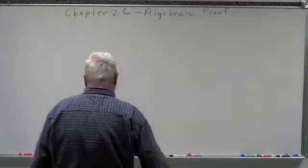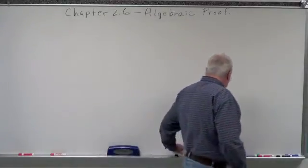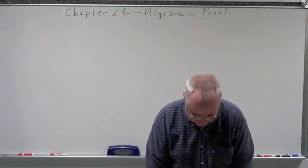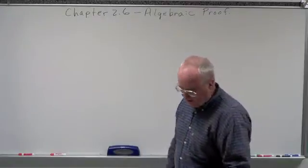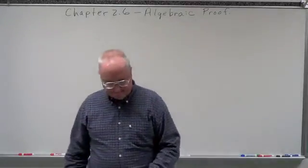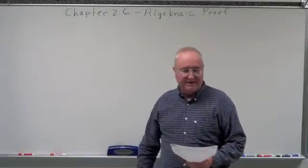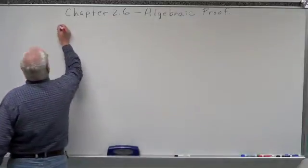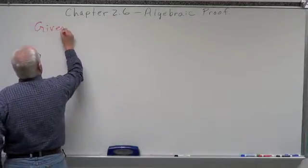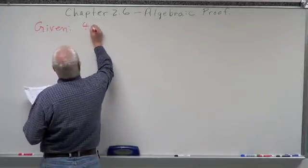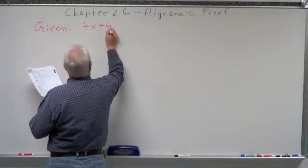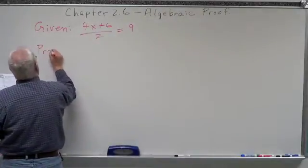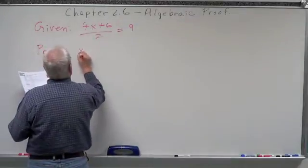In formal proof, what's going to happen is you're going to be told a given, and then you're going to be asked to prove something. This proof is on the study guide and intervention on page 43. We're given: 4x plus 6 divided by 2 equals 9, and we're asked to prove x equals 3.